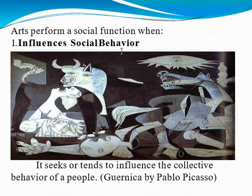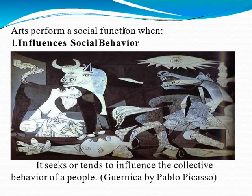So art performs a social function when it influences social behavior — it seeks to influence the collective behavior of people. A good example is the use of art in campaign rallies to promote ideologies and poster making. Art presents to the society what is wrong or good within it, and tries to open up the minds of people to look into a problem.